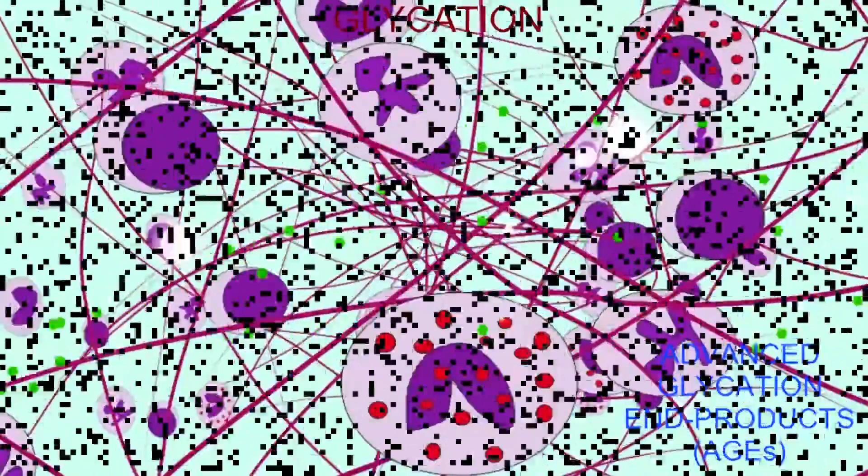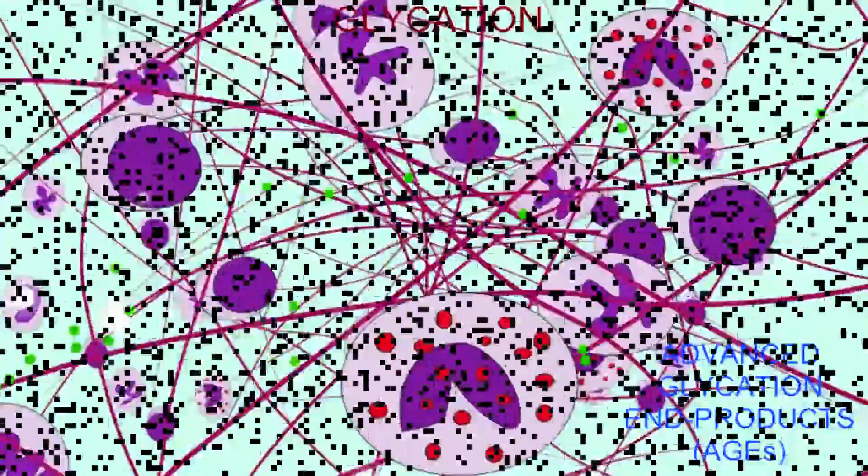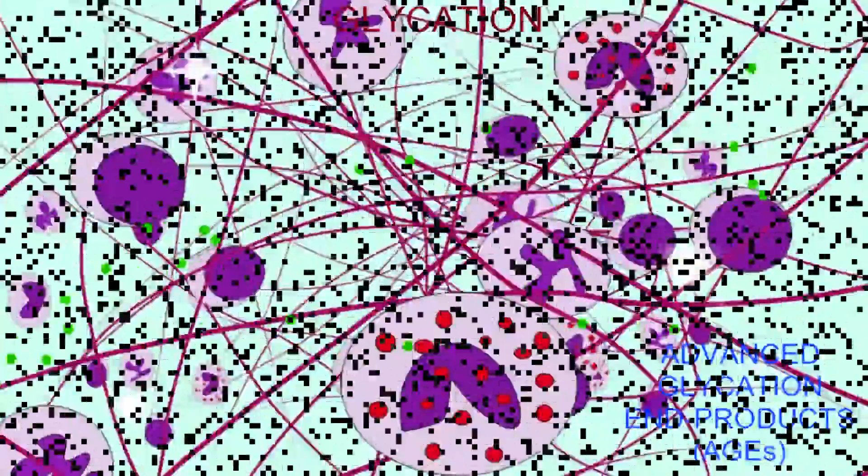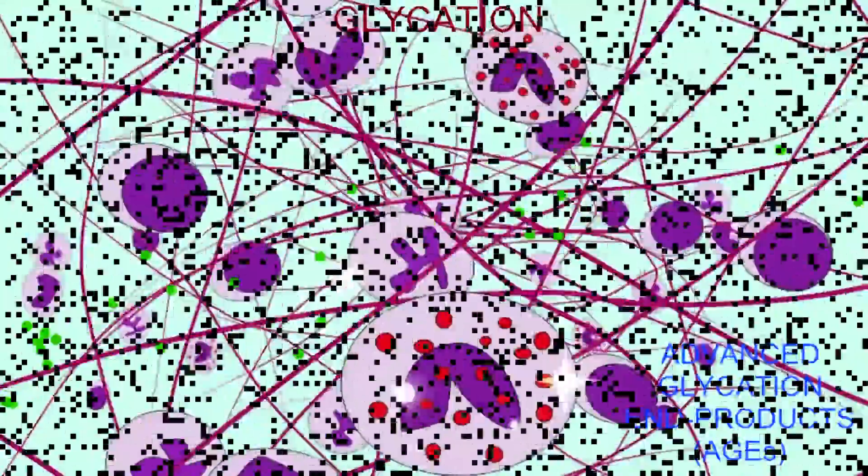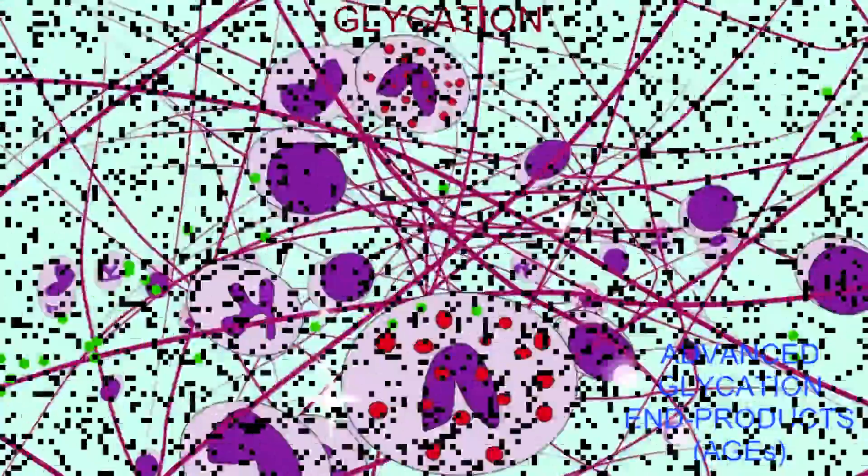There is a receptor of the immunoglobulin superfamily produced by the innate immune system known as RAGE, the receptor for advanced glycation end products. It is normally expressed in some tissues, like the lungs, but at low levels in other tissues.